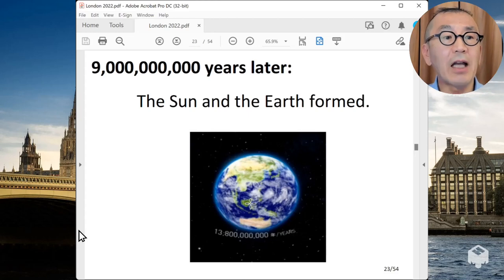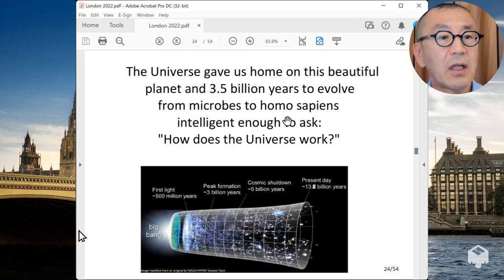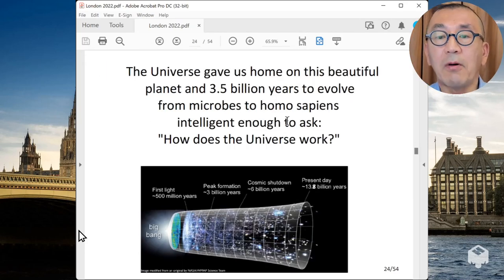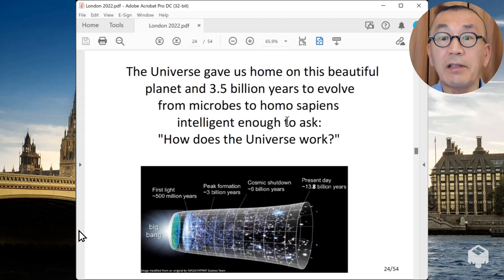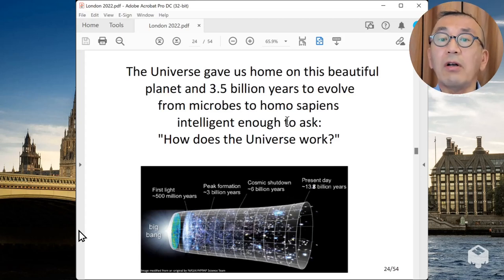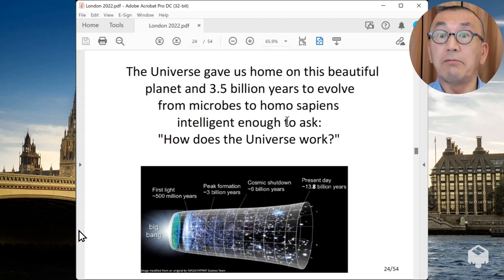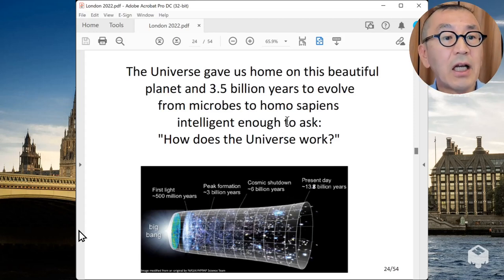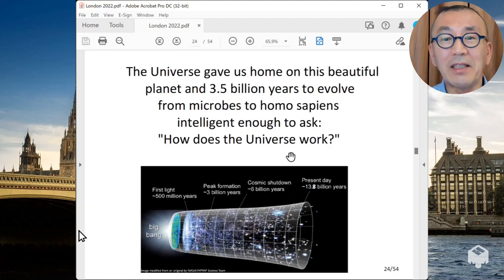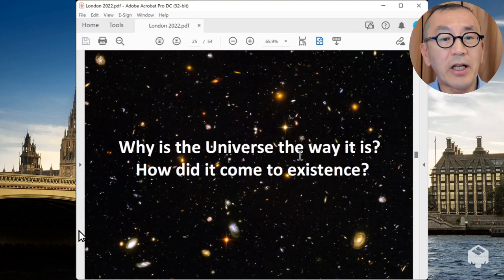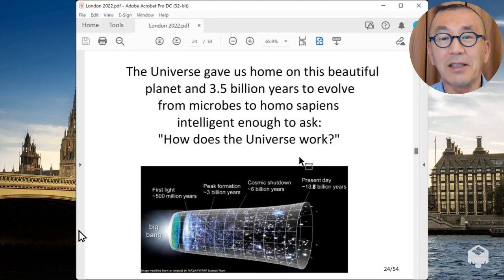And about 9 billion years after the Big Bang, finally the sun and earth formed. The earth is supposed to have formed 4.5 billion years ago. And then life emerges 3.5 billion years ago. And then it has gradually evolved from microbes to Homo sapiens after that. So it took a long time for the life to evolve into intelligent beings. Intelligent enough to ask how does the universe work?